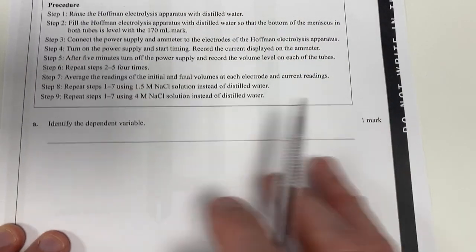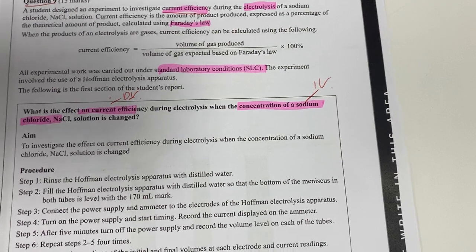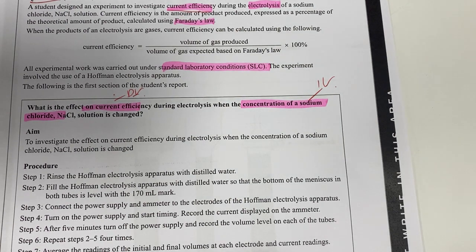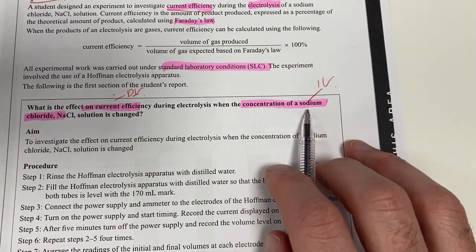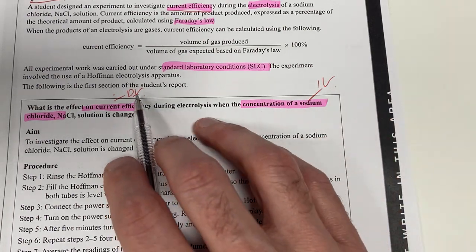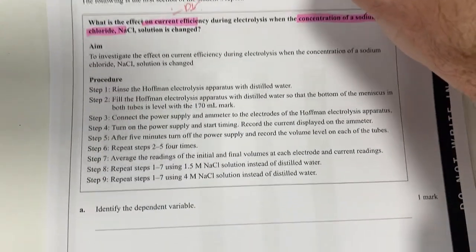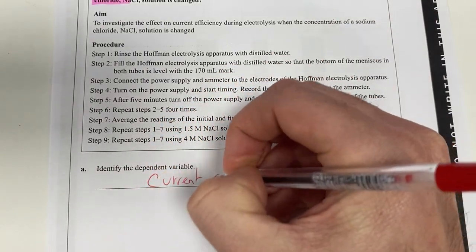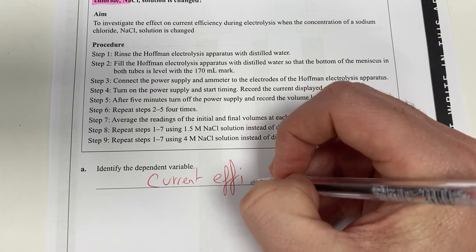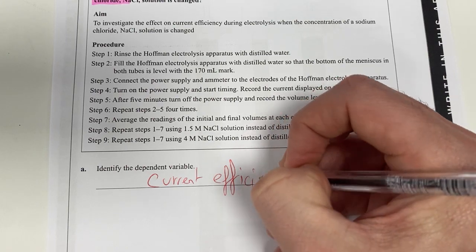Identify the dependent variable. Obviously the dependent variable is what we're going to actually measure. The independent variable is what I change, so I vary the sodium concentration. So my DV is the current efficiency.